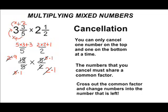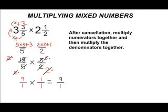When you are through canceling, you simply multiply the numerators times the numerator and the denominator times the denominator. With this example, that would be 9 times 1 is 9 for the numerator, and 1 times 1 for the denominator, which gives us 9/1.